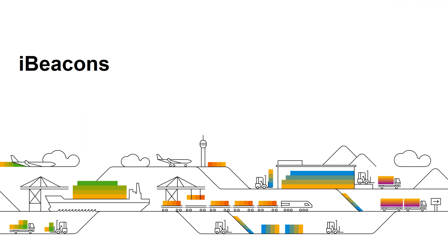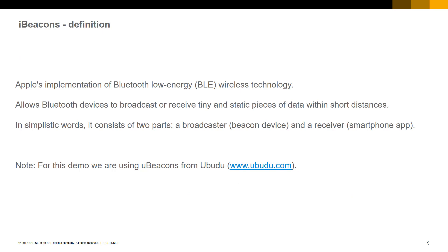Let's understand how iBeacons work. iBeacons is Apple's implementation of Bluetooth low energy wireless technology. iBeacons broadcast or receive tiny and static pieces of data within short distances. Usually, iBeacons send the data to other local devices, for example mobile phones in our case. Then the mobile device will send the data using Wi-Fi or mobile data to the management application. For our demo, we are using uBeacons from the uBudu company.